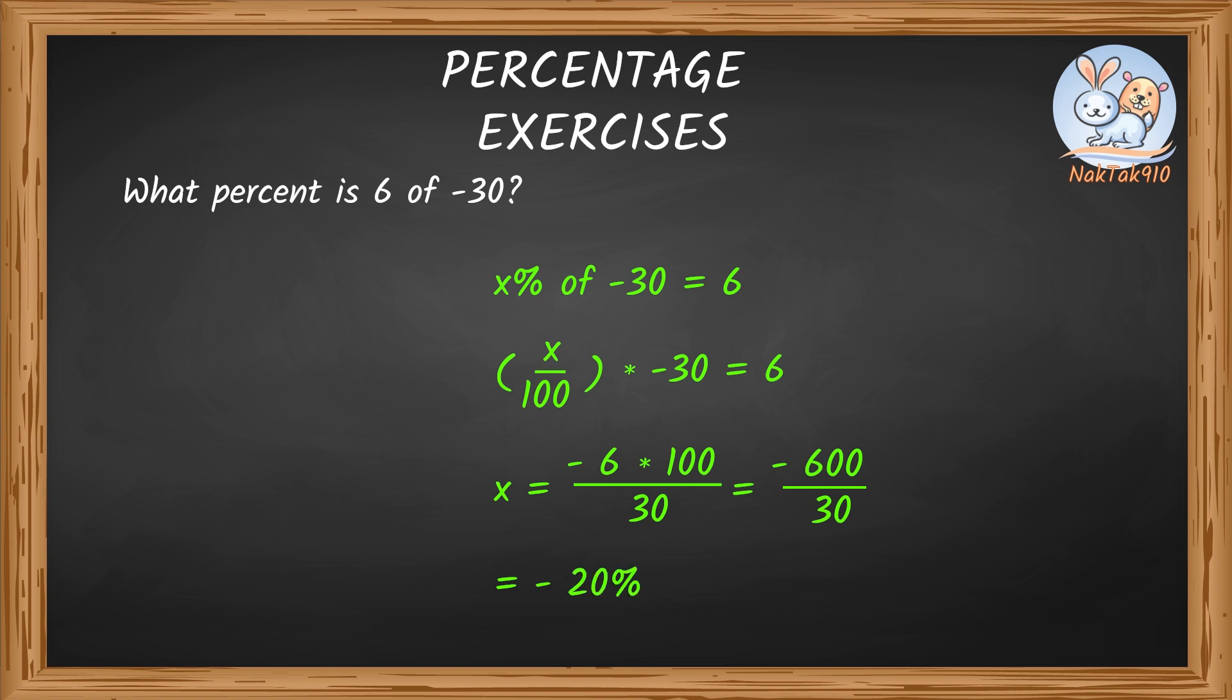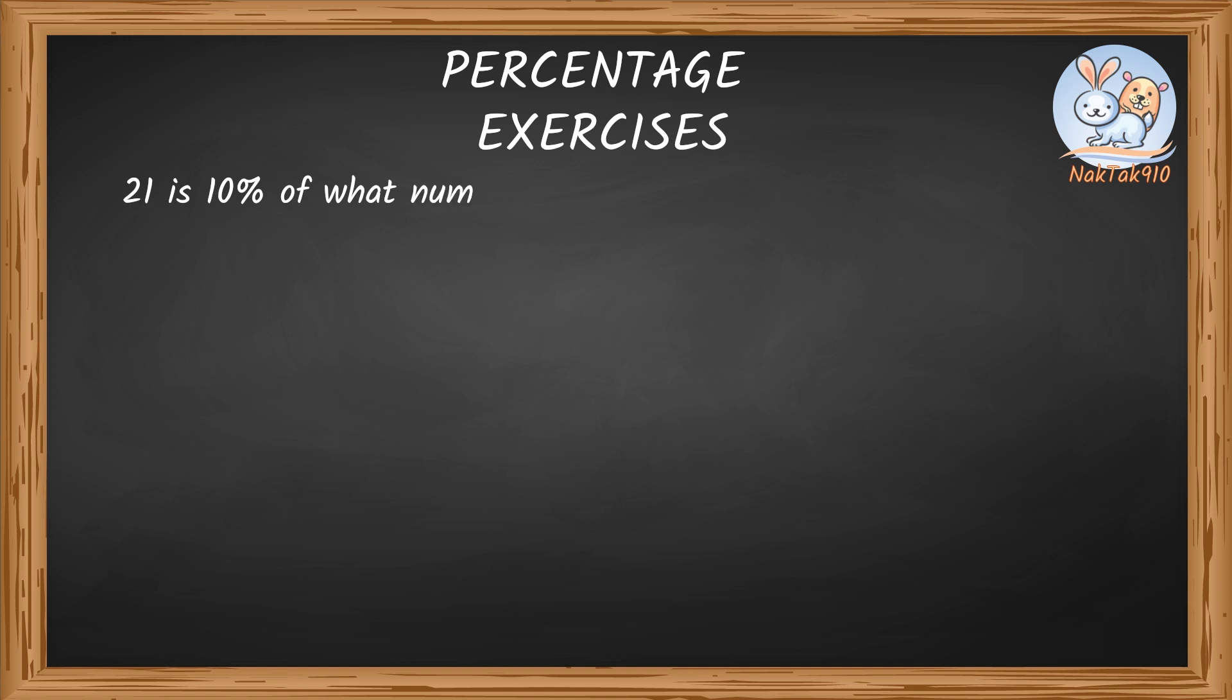Now, let me try the next one. 21 is 10% of what number? This can be written as 21 equals 10% of x, right? Correct, Tack. 10% of x can be written as 10 by 100 times x. So 10 by 100 times x equals 21. By rearranging, we get the x value as 2100 by 10, which is 210.